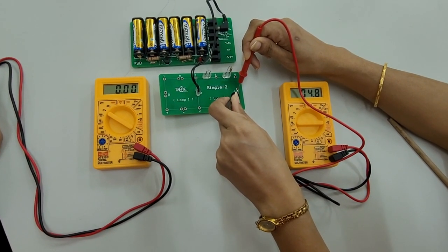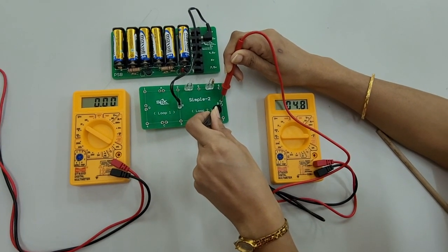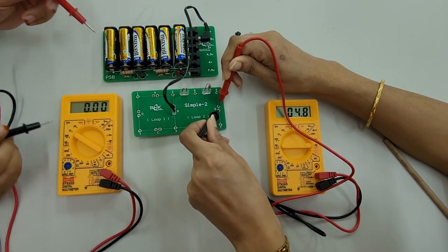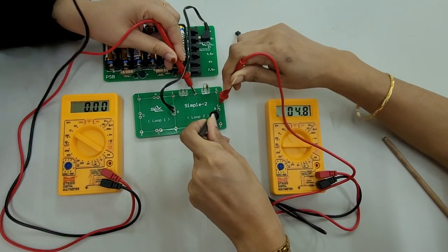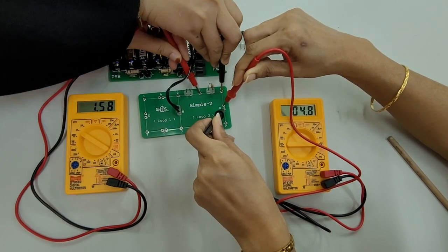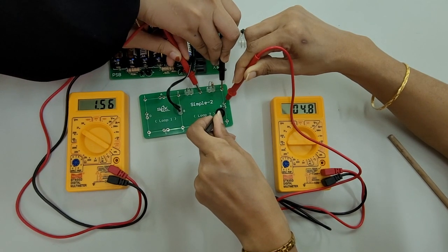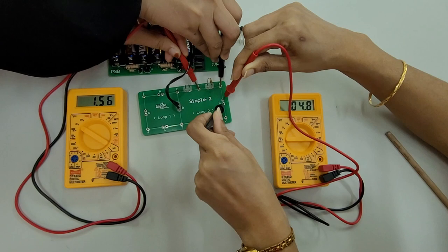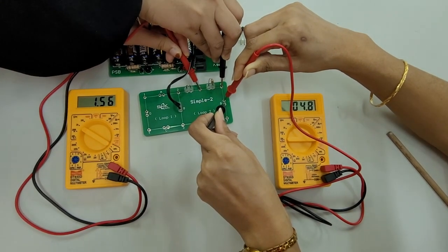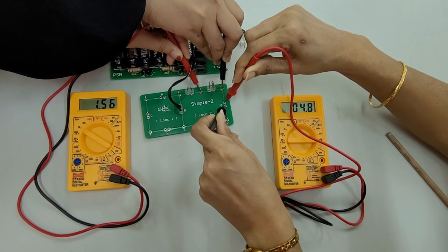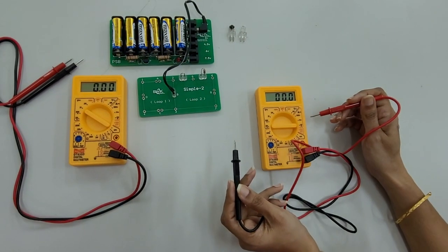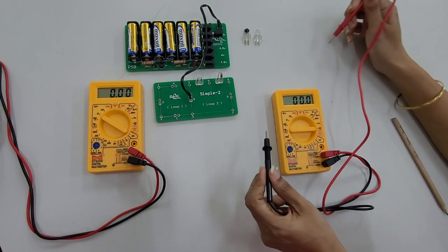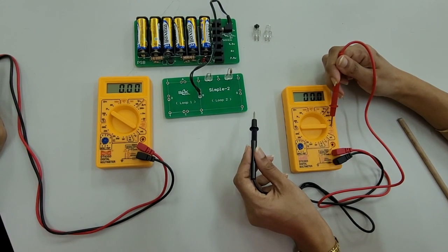Simultaneously, we have to record the corresponding voltage readings in volts in the second DMM, which we keep across points 5 and 6. Now we can note down the readings. In the ammeter, it records a reading of 4.8 mA, and in the voltmeter, it records a reading of 1.56 volts.